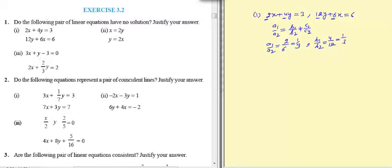Now c1 by c2 is 3 by 6, that is 1 by 2. As we can see that first two ratios are equal, a1 by a2 equal to b1 by b2, both are 1 by 3 but not equal to c1 by c2, that is 1 by 2. So option 1 is correct.